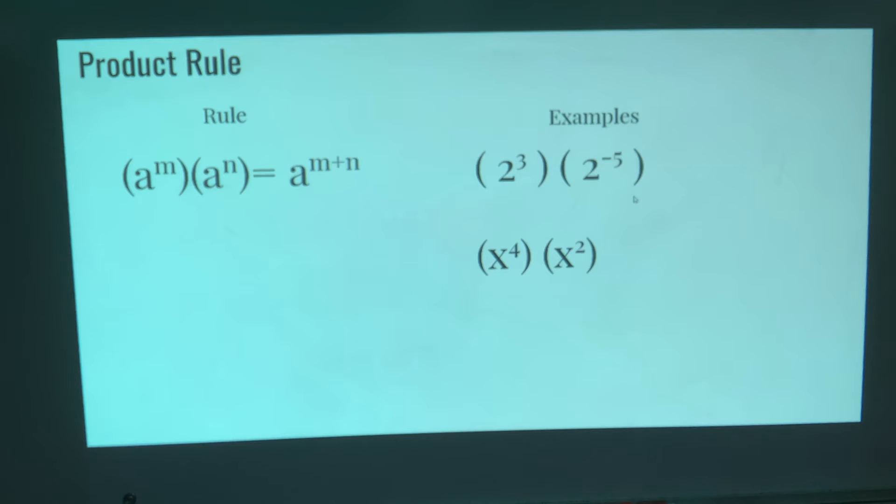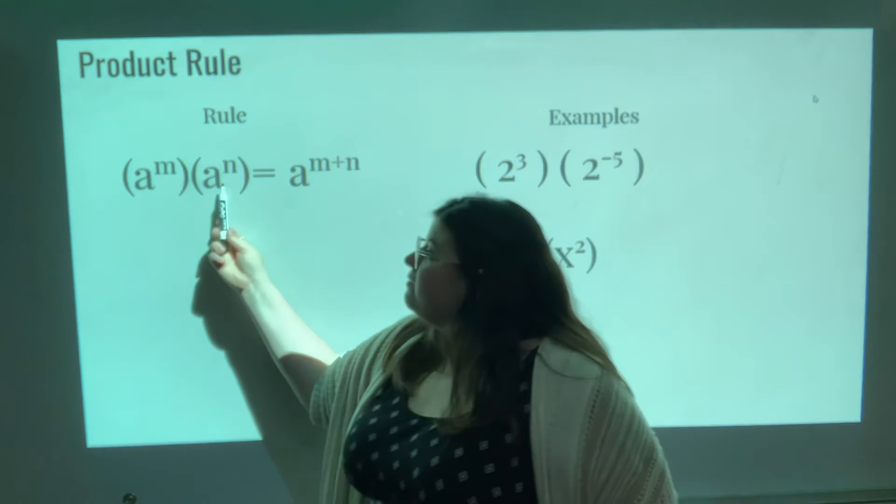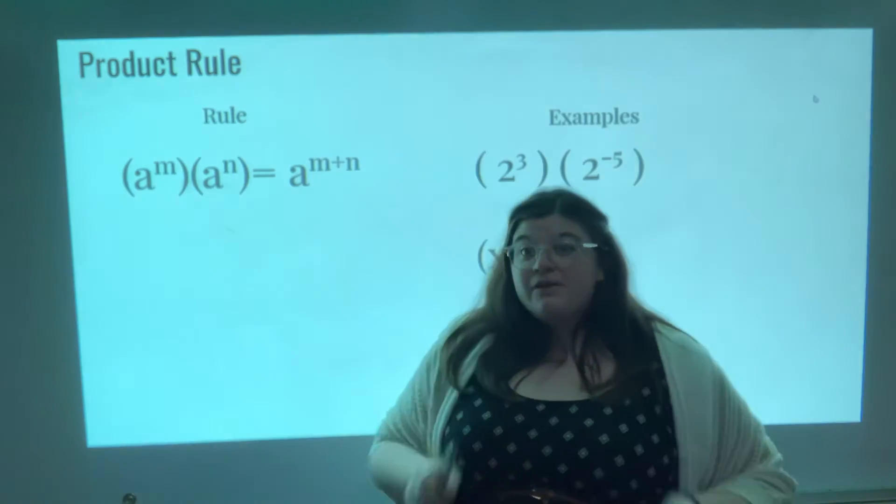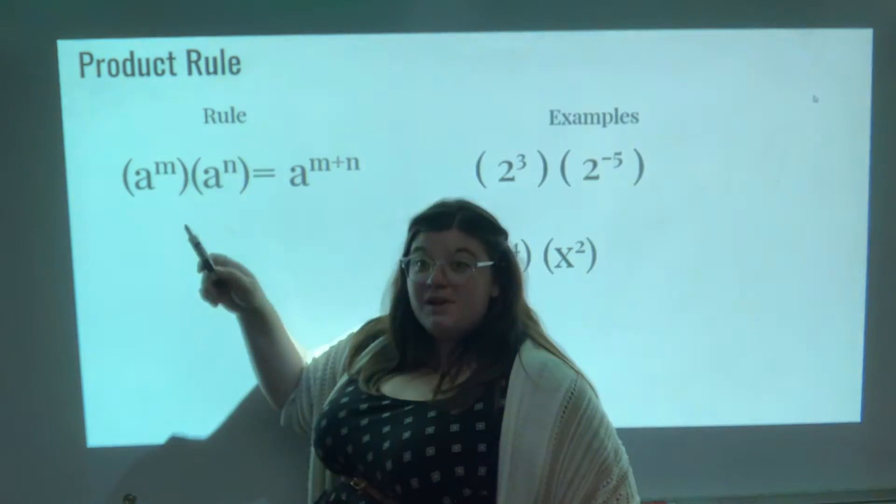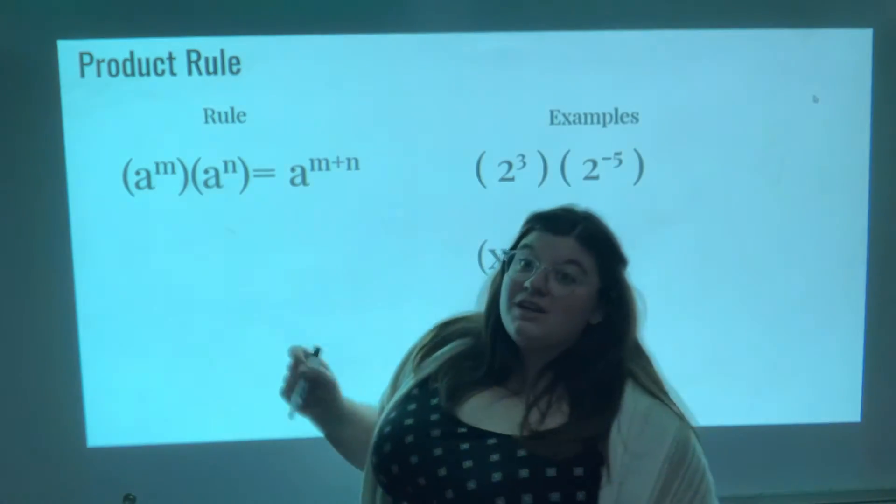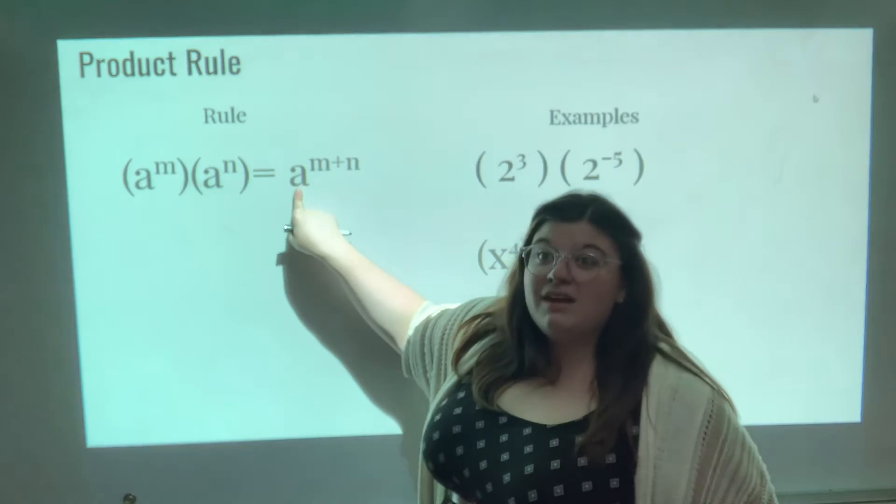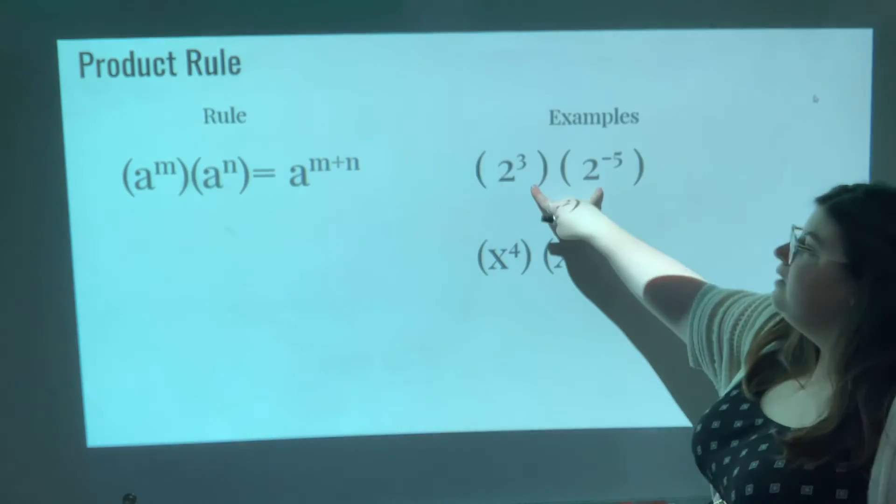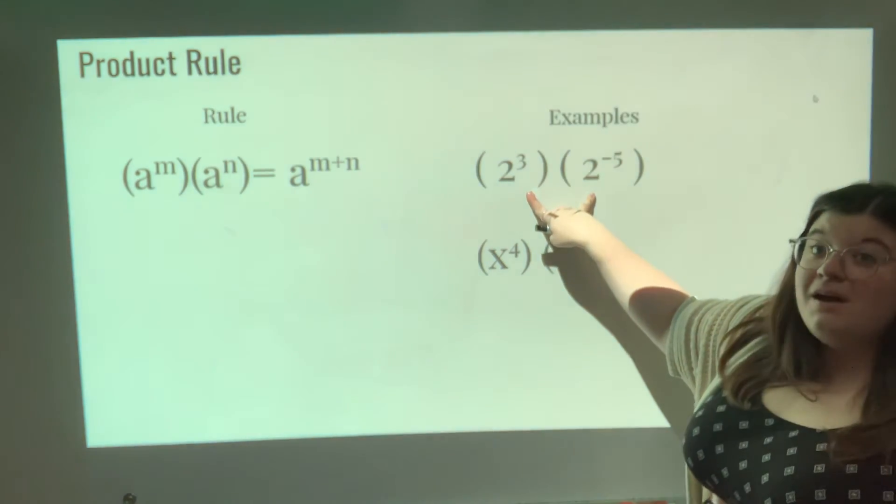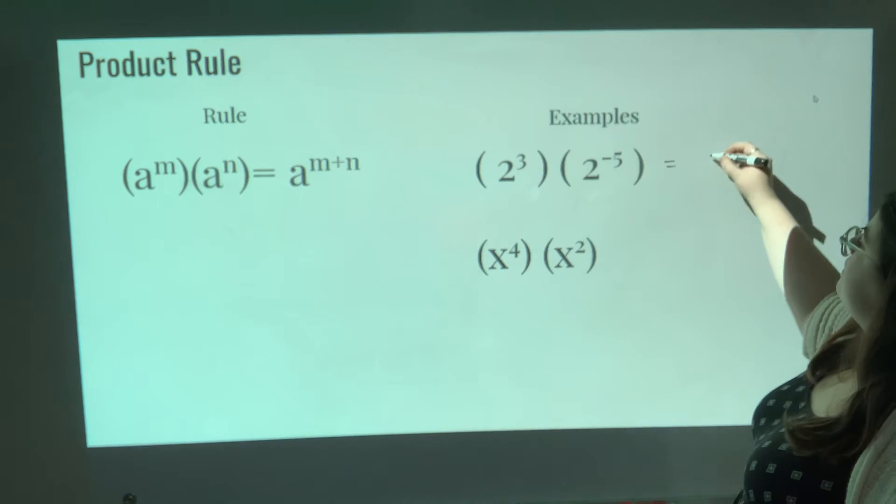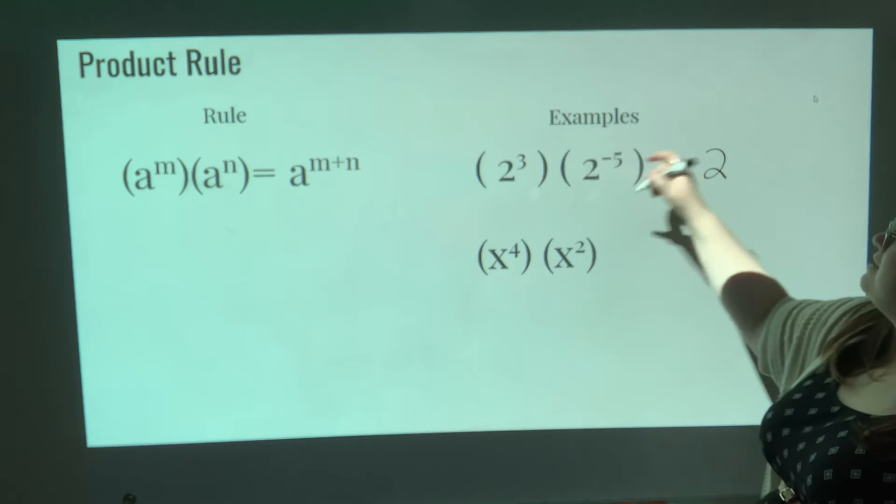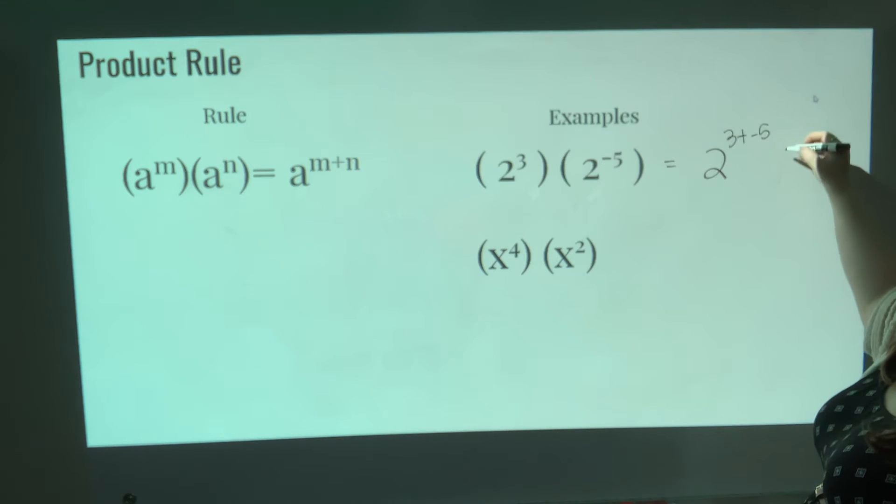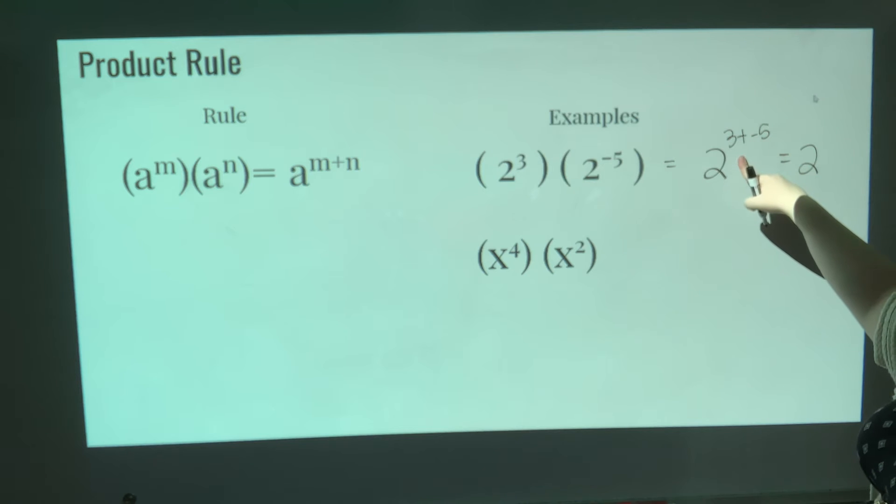Product rule. What if you have two exponents with the same base but different powers, and they're being multiplied together? So if you have A to the power of M multiplied by A to the power of N, what you're going to do is keep that same base, but take those exponents and add them together. So here, I'm multiplying exponents. They have the same base of 2, but I'm just going to add the exponents. So that is 2 to the power of 3 plus negative 5, which I'm going to simplify down because I can add those together. 3 plus negative 5 is negative 2. So 2 to the power of negative 2—hey,